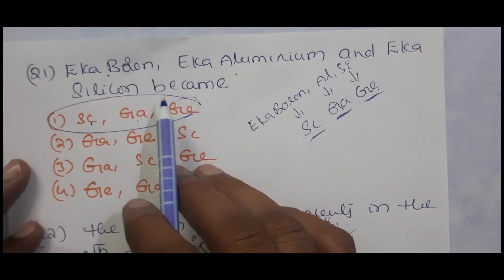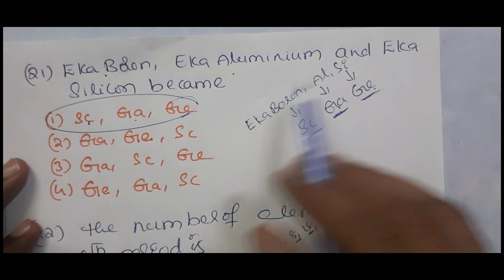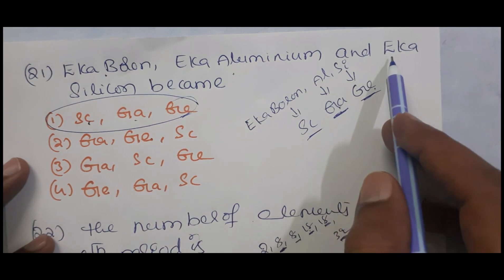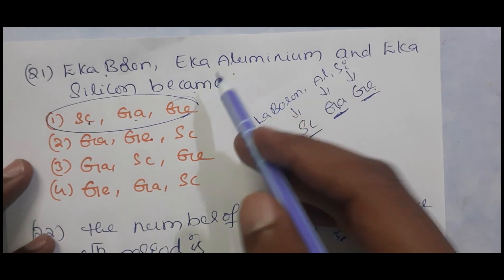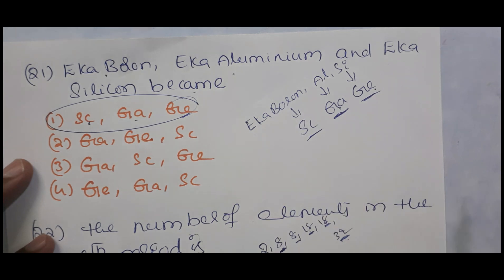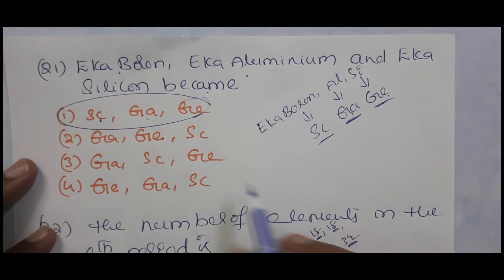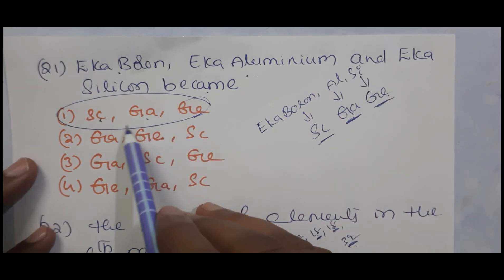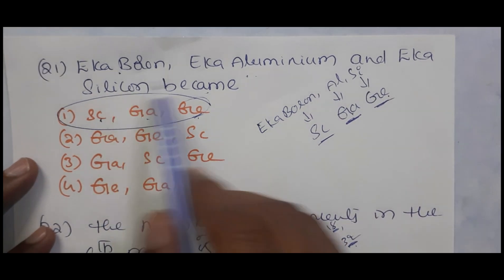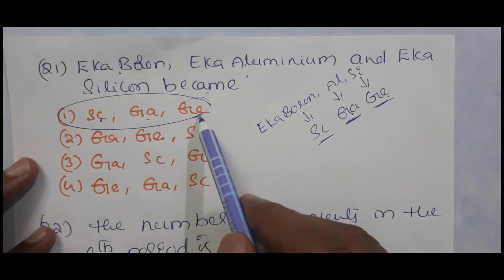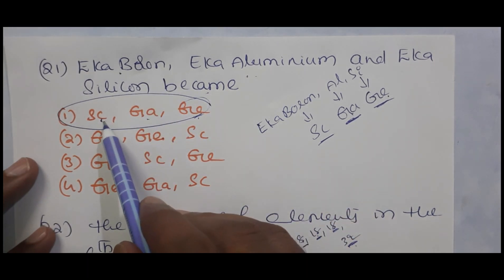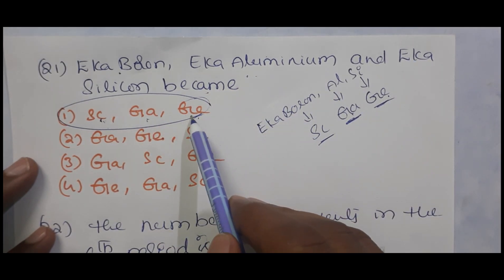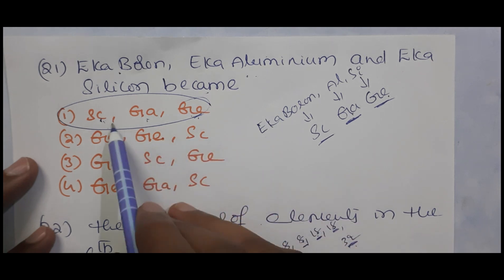Question 21: Eka-boron, eka-aluminium, and eka-silicon were estimated by Mendeleev in his periodic table. After discovery, their properties matched these elements and they were named silicon, gallium, and germanium respectively — that is, eka-boron became silicon, eka-aluminium became gallium, and eka-silicon became germanium.